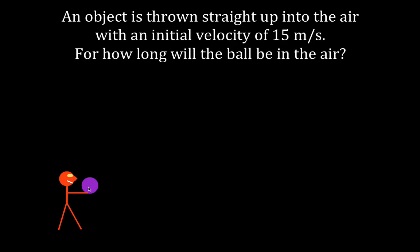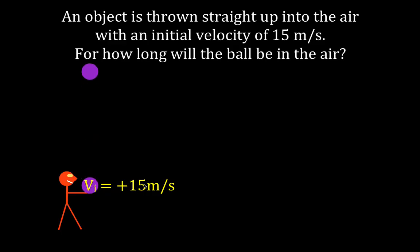We're going to project this object straight up with initial velocity positive 15 meters per second — positive in the up direction — and it's going to go up, stop, and then come straight back down. We want to know the total time for the up and the down that the object is going to be in the air. We're given that the initial velocity is 15 meters per second, and we want to know the time.